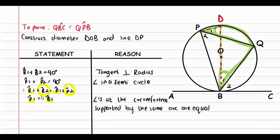To understand this with an example: suppose angle P1 and angle B1 are both equal to 30 degrees. Since angle B1 plus angle B2 must equal 90 degrees, and angle B1 is 30 degrees, then angle B2 equals 60 degrees. Similarly, since angle P1 is 30 degrees and angle P1 plus angle P2 must equal 90 degrees, angle P2 also equals 60 degrees. So angle B2 and angle P2 are equal — this is just an example to illustrate the reasoning.